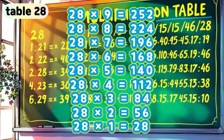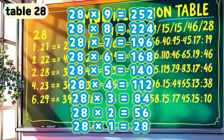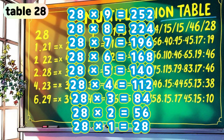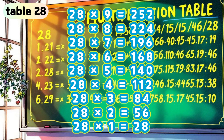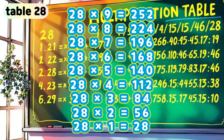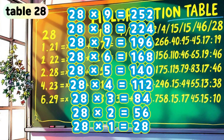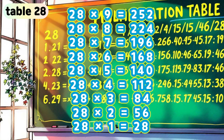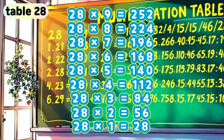Table 28. 28 times 9 is 252. 28 times 8 is 224. 28 times 7 is 196. 28 times 6 is 168. 28 times 5 is 140. 28 times 4 is 112. 28 times 3 is 84. 28 times 2 is 56.